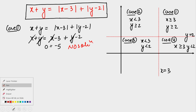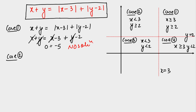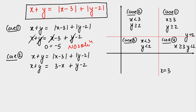Case 2: x < 3 and y ≥ 2. The equation becomes x + y = (3−x) + (y−2), since |x−3| opens with a negative sign and |y−2| opens positively. The y terms cancel, giving 2x = 1, so x = 1/2. A solution exists in this case.